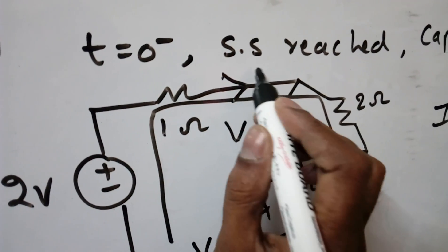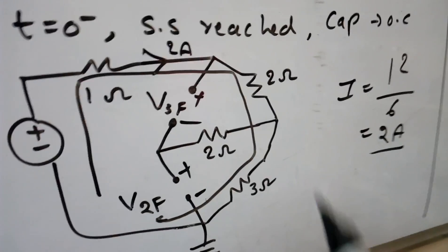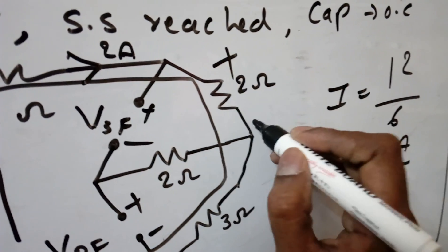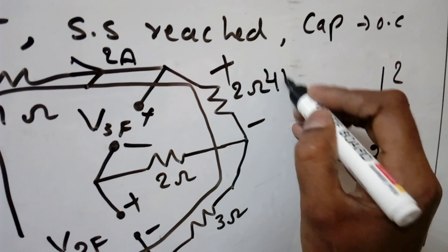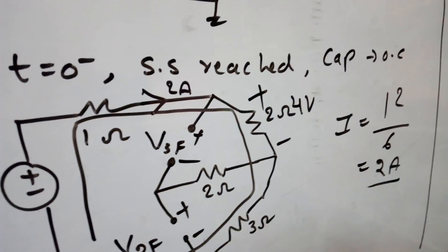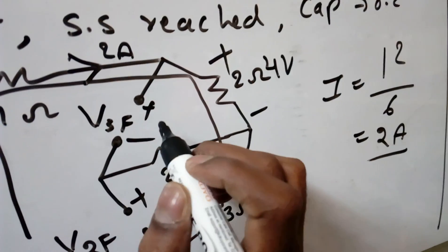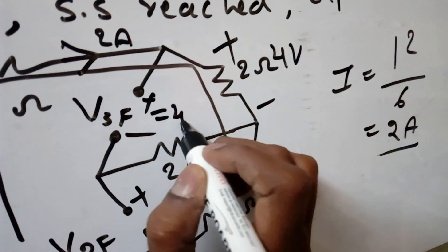Where it is coming? This is the 2 ampere current is flowing. Now here also 2 ampere coming. So what is this voltage? 2 into 2, 4 volts, which is nothing but this V3F, because in parallel, same. So V3F is nothing but 4 volts.